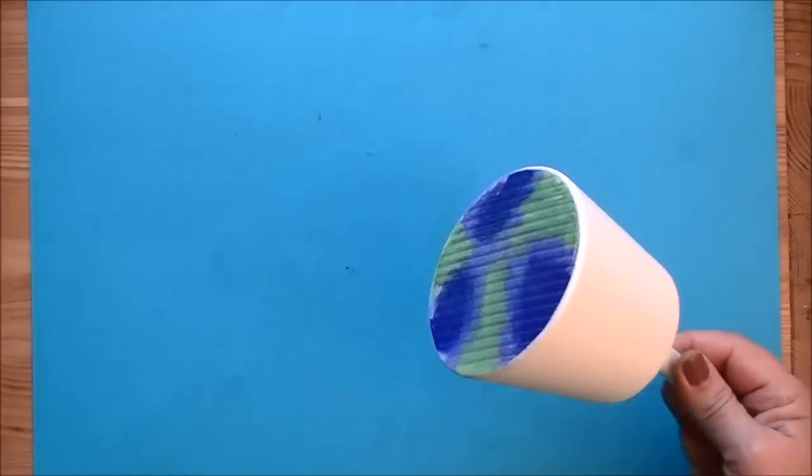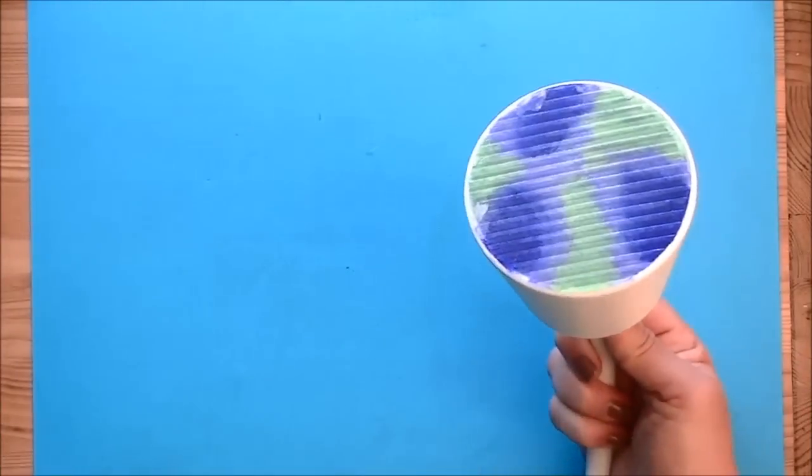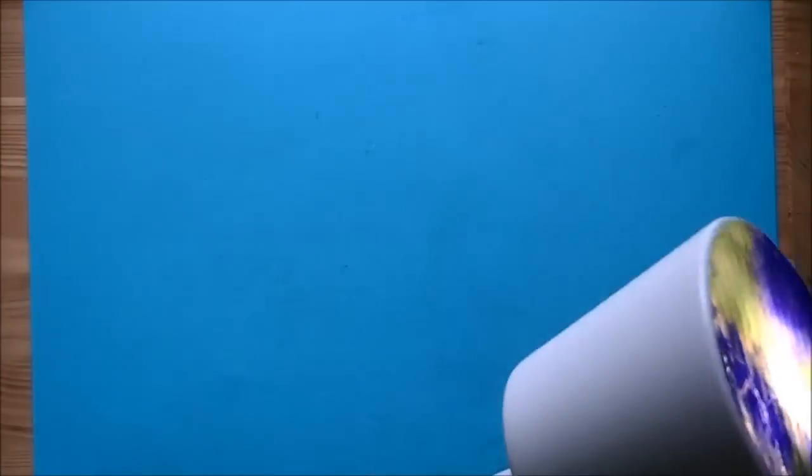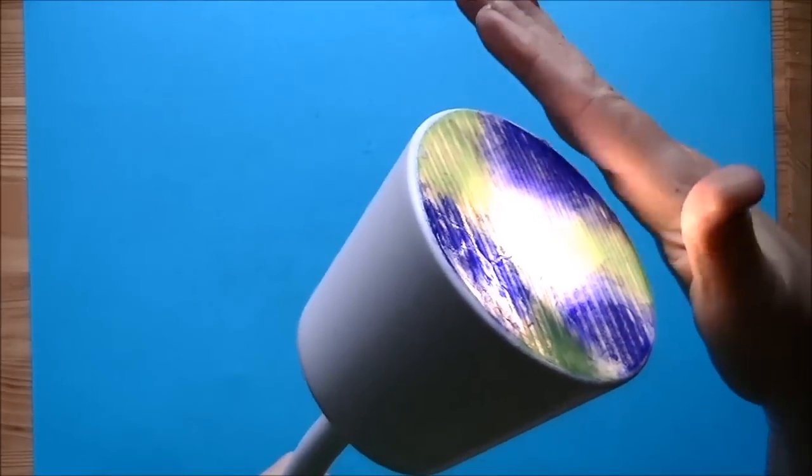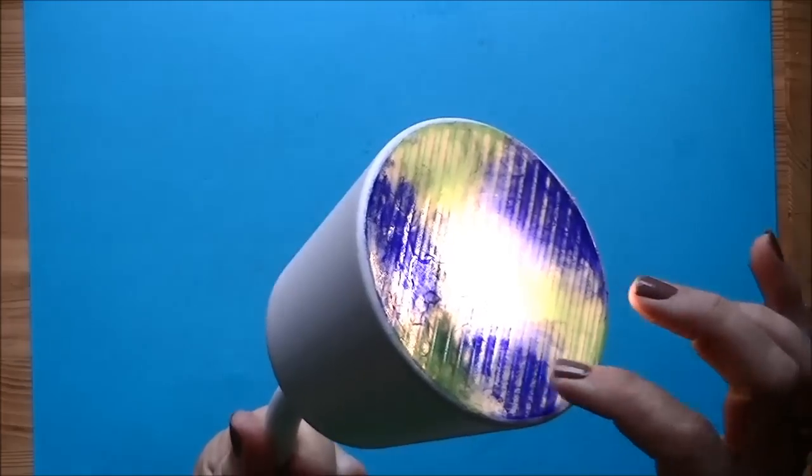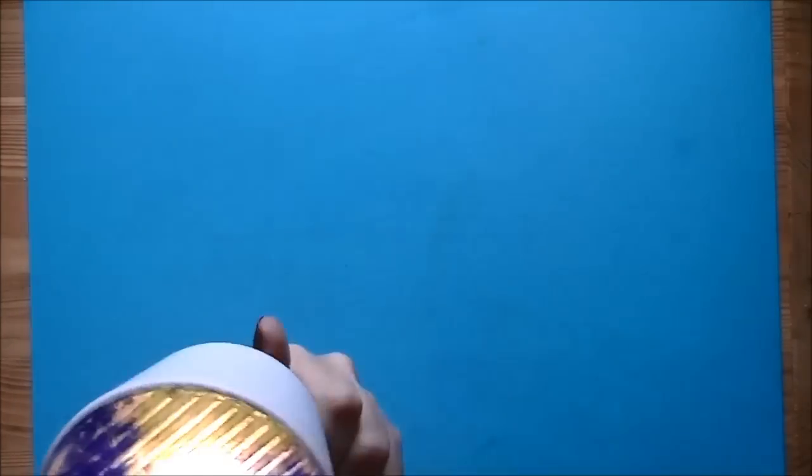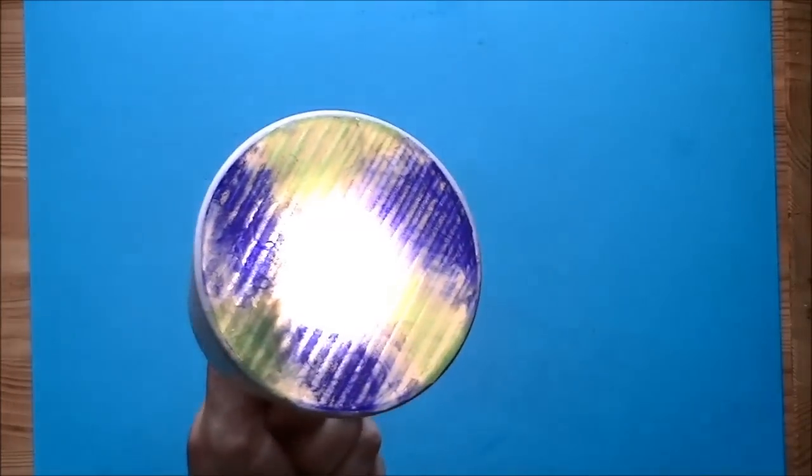After the glue has dried my lampshade is ready for use. I used an LED lamp from Ikea because this won't heat up and won't damage the vertigo foil and stay cool.